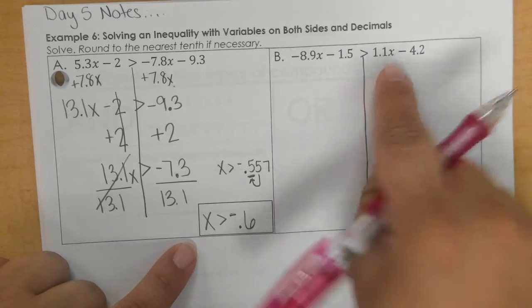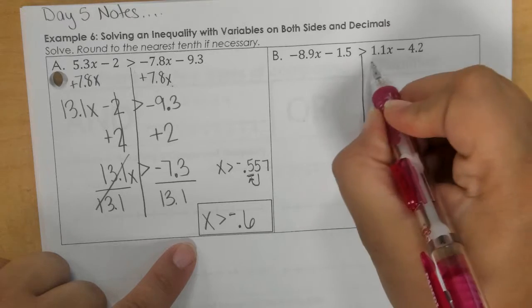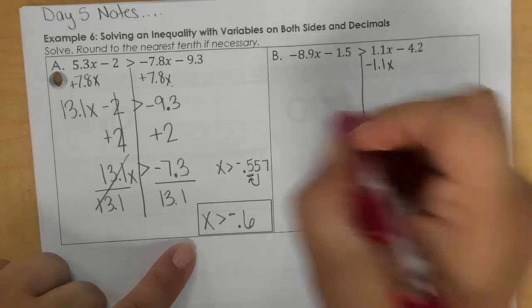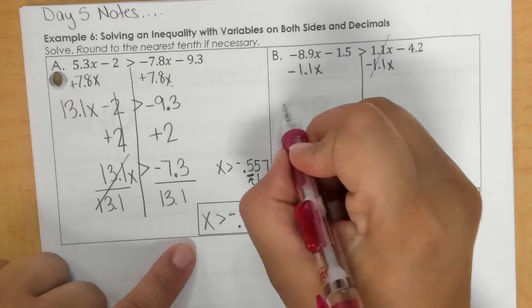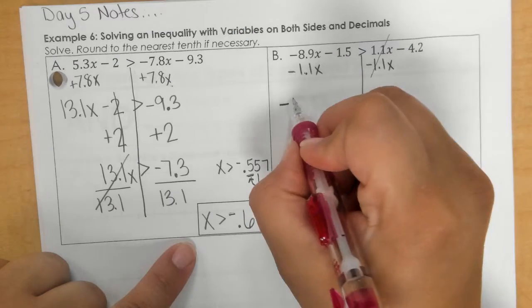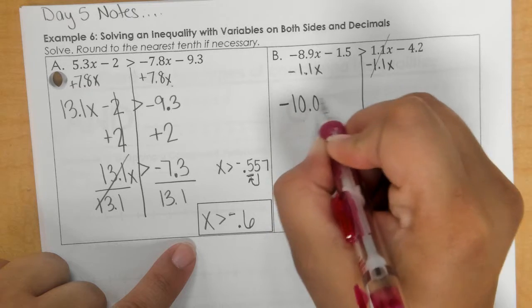Again, we're going to get our x's together. So I want to move this over to the other side by subtracting it. And if I subtract that, we get negative 10.0x.